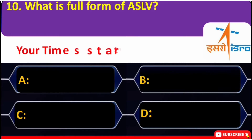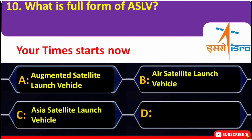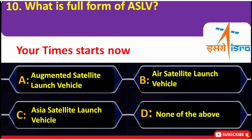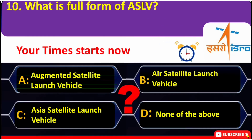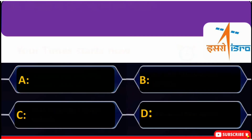What is the full form of ASLV? A. Augmented Satellite Launch Vehicle, B. Air Satellite Launch Vehicle, C. Asia Satellite Launch Vehicle, D. None of the above. Correct answer is A — Augmented Satellite Launch Vehicle.